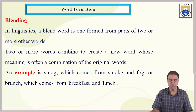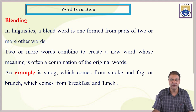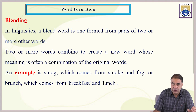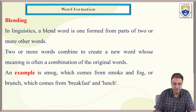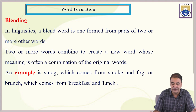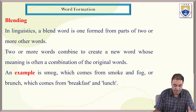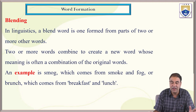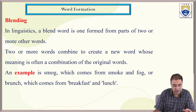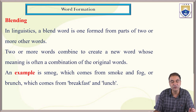Two or more words combine to create a new word whose meaning is often a combination of the original words. For example, SMOG is a blend of SMOKE and FOG. Or consider BRUNCH — it's a combination of BREAKFAST and LUNCH. In BRUNCH, we have taken the first two letters B and R from breakfast and then the last four letters from lunch. This resulting word BRUNCH is completely different from BREAKFAST or LUNCH, and both original words have lost their shapes in the process of blending.